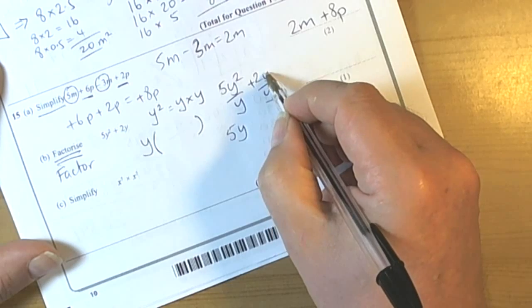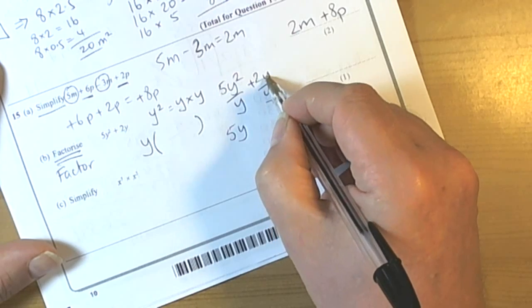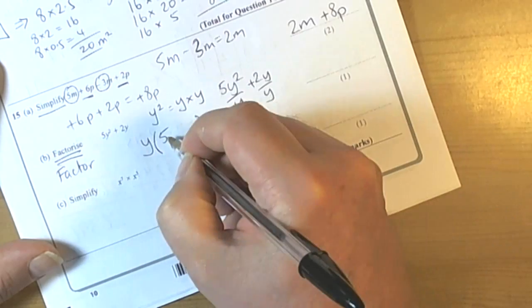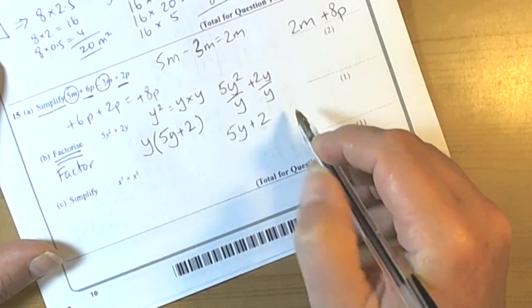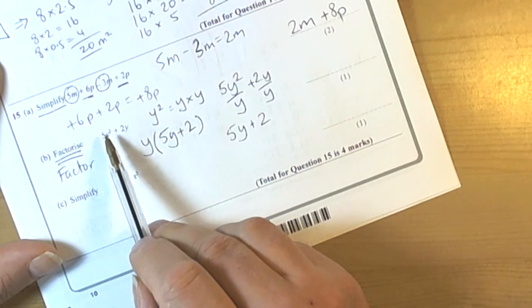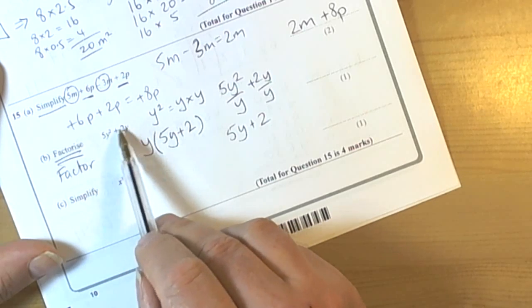Y divided by Y is 1. 2 times 1 is 2, so we're left with 2. So inside the bracket goes 5Y plus 2. Again, factorize has the keyword factor at the beginning, so it means find a common factor to all the terms in the expression.